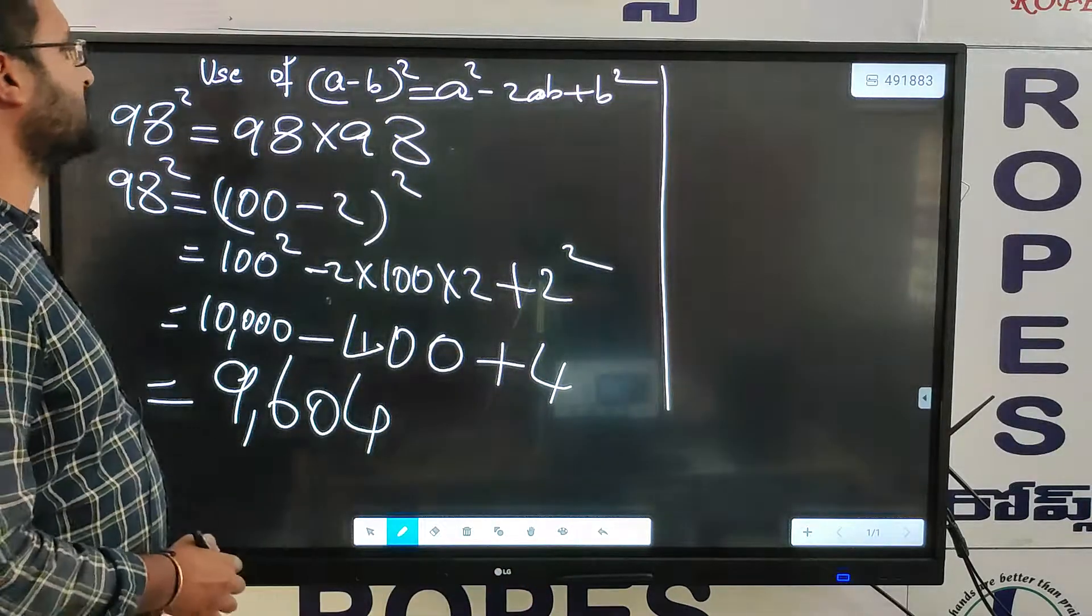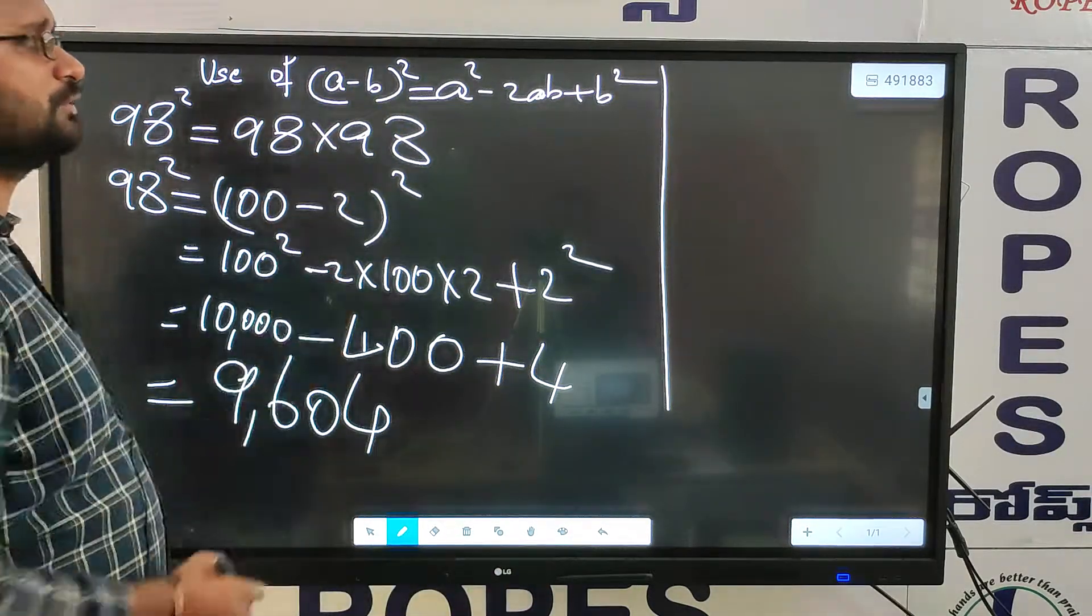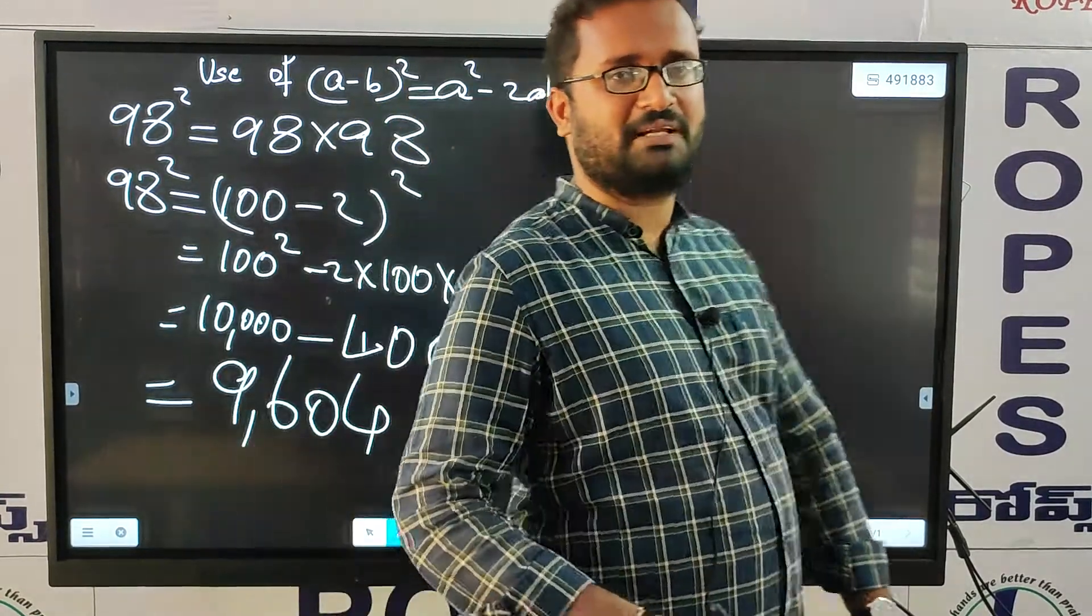Hello everyone. The use of a minus b whole square formula. The a minus b whole square, that is equals to a square minus 2ab plus b square.